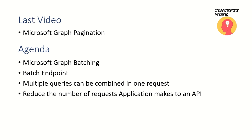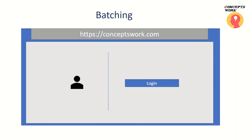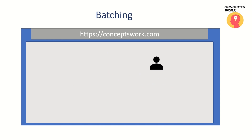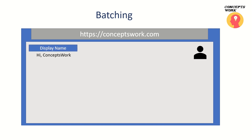Let's begin by understanding this with the help of an example. Consider a scenario where I have an application on conceptswork.com and I ask my user to navigate to that web link and log in. The authentication process is straightforward — the access token or ID token I receive for this user will contain their application details. Let's say I want to access the user's display name; I can extract that and show it in my console.